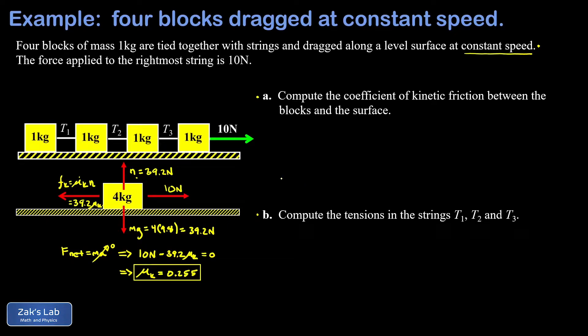To answer part b, one way would be to start from the block all the way on the left, which experiences an unknown force of T1 to the right. Now that we have the kinetic friction coefficient, we can figure out the friction force on each block, apply Newton's second law, and solve for T1, then work our way through the blocks left to right solving for T1, T2, and T3. But I want to illustrate the most general detailed approach right from the beginning.